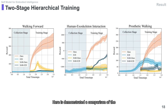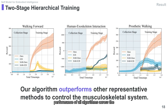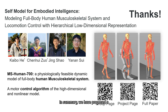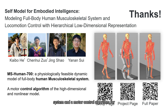Here is demonstrated a comparison of the performance of all algorithms across the three tasks. In summary, we have proposed a physiologically feasible dynamic model of the full-body human musculoskeletal system and a motor control algorithm for it. Thank you.